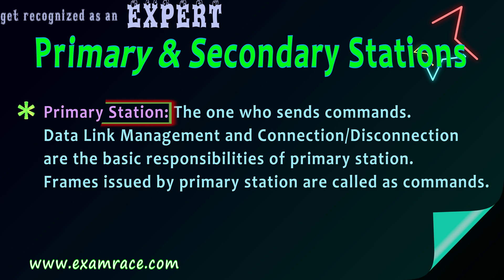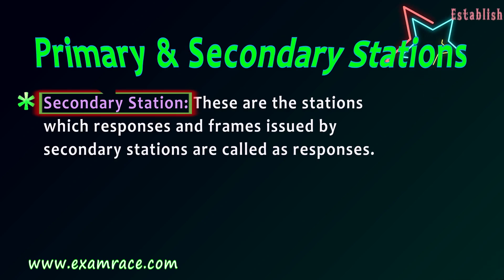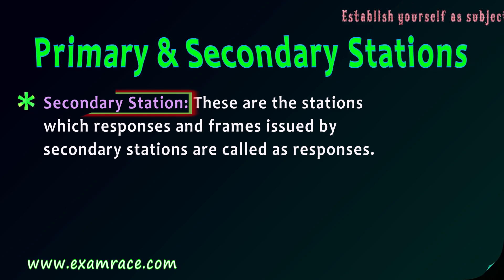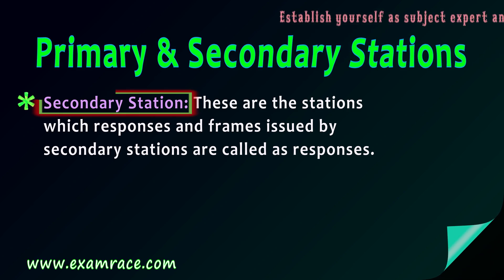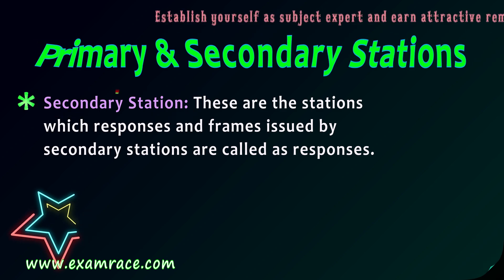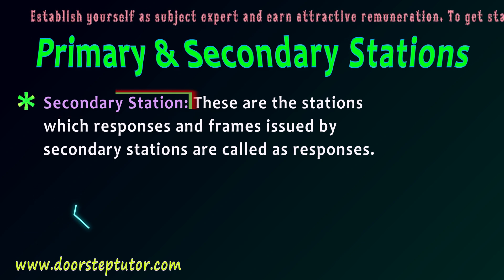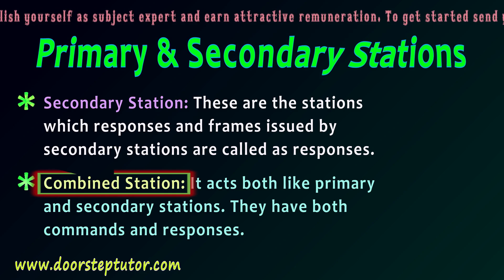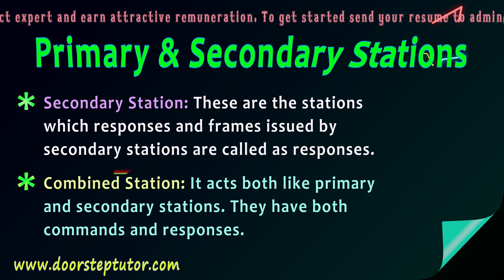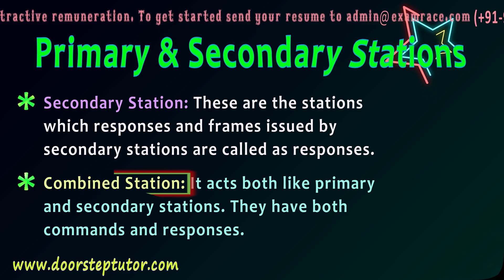Frames issued by the primary station are called commands. The secondary station is the one that responds — frames issued by the secondary station are called responses. The primary station is on the sender side and the secondary station is on the receiver side. A combined station acts as both primary and secondary station, issuing both commands and responses.